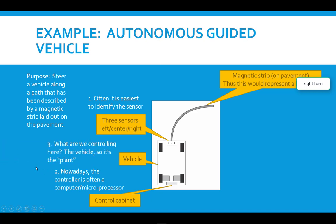The next question is, what's the plant? And actually, we're steering the vehicle. The vehicle is, thus, the plant. It's the position of the vehicle that we're trying to control.